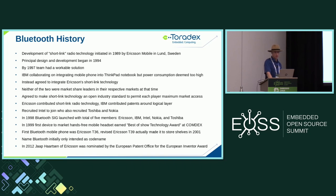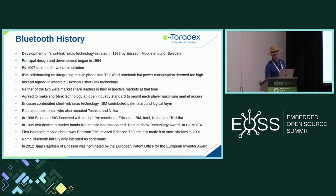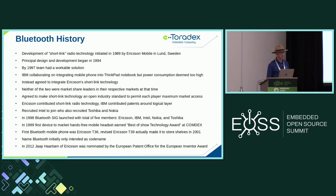They launched with five members: Ericsson, IBM, Intel, Nokia, and Toshiba. In 1999, the first devices came to market; a mobile headset earned best of show at Comdex. The first mobile phone with Bluetooth was the T36, and the T39 made it to store shelves in 2001. The name 'Bluetooth' was only a code name — marketing failed to come up with something better. In 2012, Jaap Haartsen from Ericsson received the European Patent Office Inventor Award for this work.